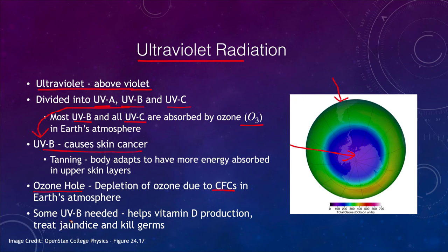Some UVB is actually needed — it helps production of vitamin D, treats conditions like jaundice, and can sterilize and kill germs. But obviously if you've been out in the sun too much and gotten too much UVB, you'll notice that with a sunburn.